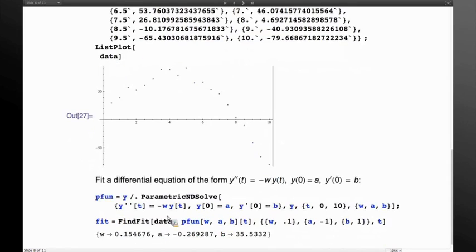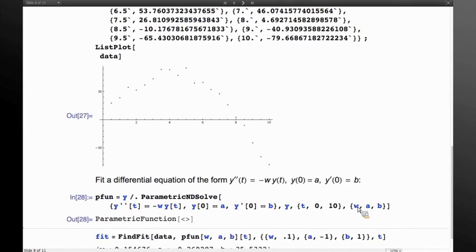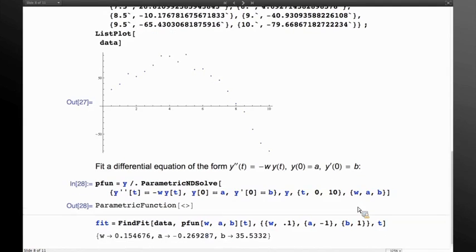What we are going to now use parametric NDSolve is to find the value of w, a, and b. So the first thing we do is we set up the problem. We use parametric NDSolve y double prime equal to negative w times y of t. Give it the initial conditions, dependent variables, independent variables, and we now have three parameters, w, a, and b. When we get the result, I'll remove the semicolon so you can see the result. You get a parametric function similar to what we had before.